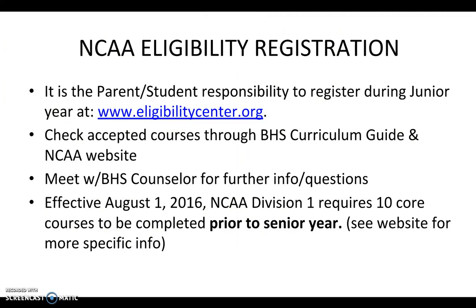It is the parent and student's responsibility to register during their junior year at eligibilitycenter.org. You'll want to check accepted courses through the Bettendorf High School Curriculum Guide and the NCAA website — that course list is very similar to the RAI course list. Your student should meet with their counselor for any further questions. Effective 2016, NCAA Division I requires 10 core courses to be completed prior to senior year, so check with your counselor to make sure your student is on track.